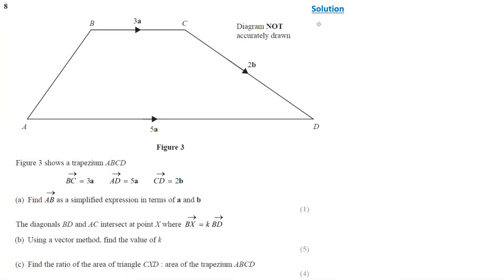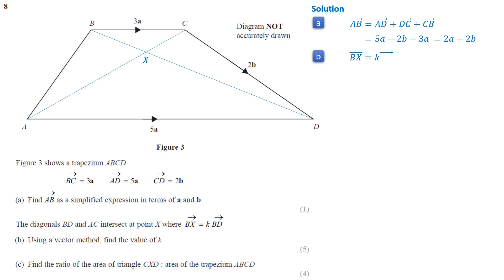In this question, vector AB equals the sum of vectors AD, DC, and CB. So vector AB equals 2a minus 2b. It is given that vector BX equals k times vector BD. So vector BX equals 3k·a plus 2k·b.